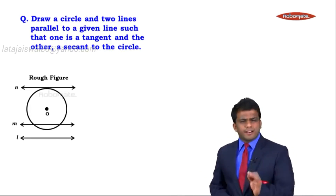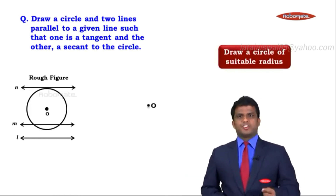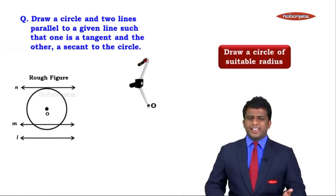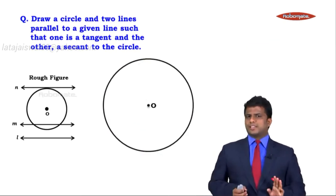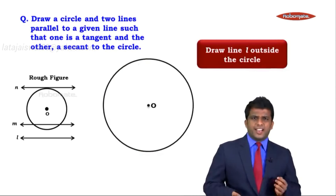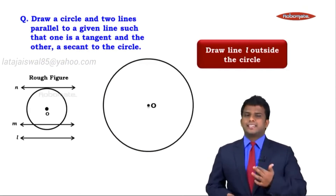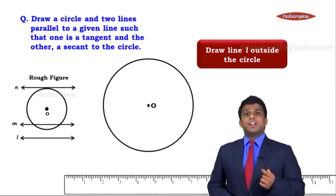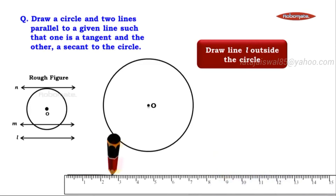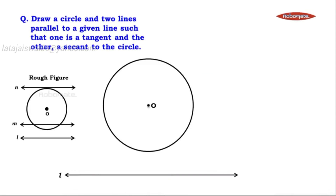First, let's draw a circle of any suitable radius of our choice with center O. The circle is ready. Now we need a given line, so let's draw line L anywhere in the exterior or outside the circle. We take a ruler and draw a line which is now outside the circle.